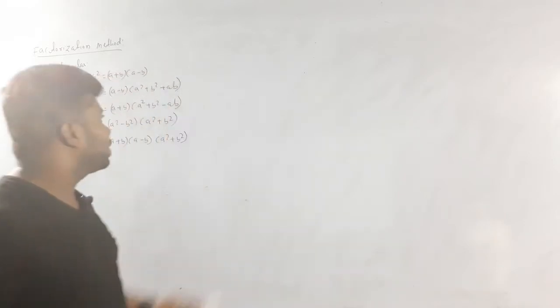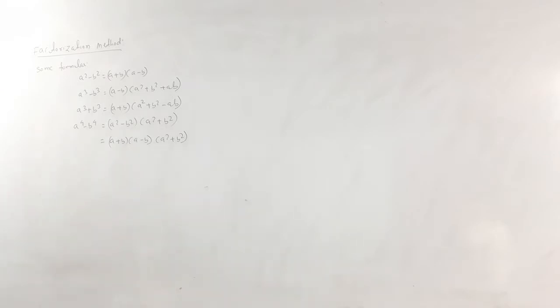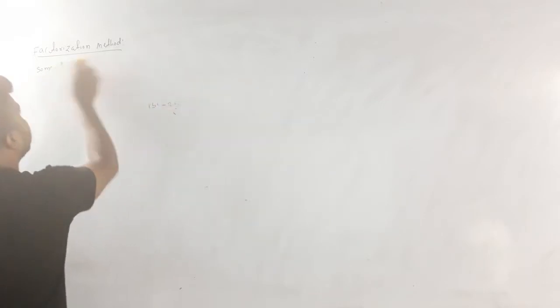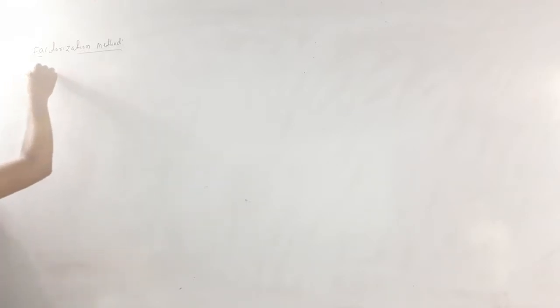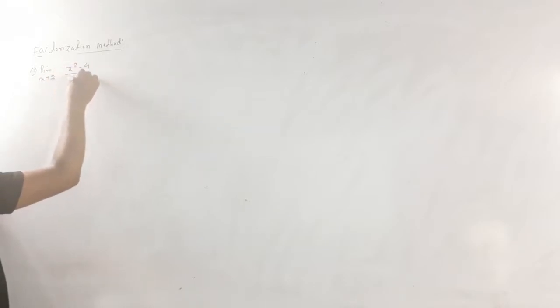First, we have done this formula, then we have done the question correctly. So we will apply the formula. We have given the first idea — we have to solve the question: limit x tends to 2, x squared minus 4, divided by x minus 2.